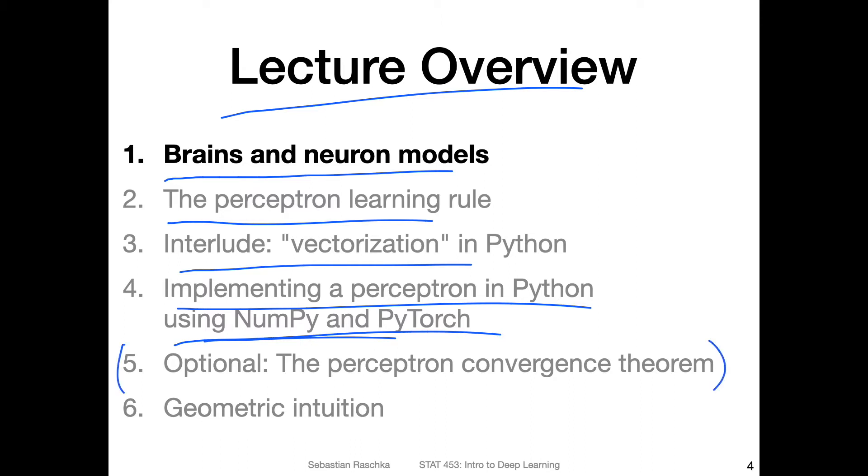Then optionally, I have a video or planning to make a video on the perceptron convergence theorem. So I have to see how long these videos take, whether we have time for that, because to be honest, this is not a super important topic. And I don't want to talk about it for too long, and then not having enough time for other topics in this class, which I think are more relevant and more important. The perceptron convergence theorem is a mathematical proof. It may be useful for some of you in other contexts, but it's not really that useful for deep learning in the grand scheme. And then lastly, I want to give a brief intuition into the geometric aspects of the perceptron, but one thing at a time. So let's start with brains and neural models.